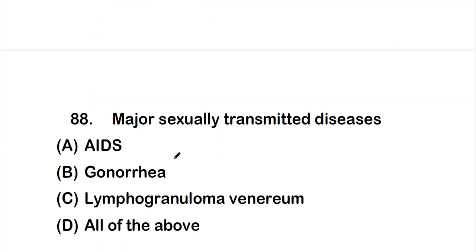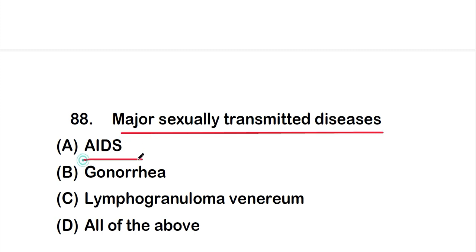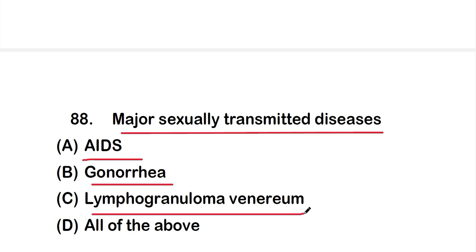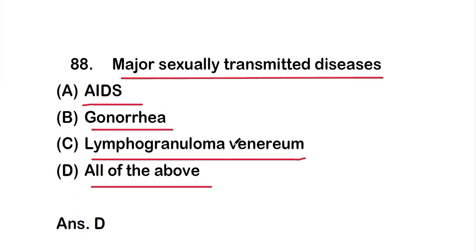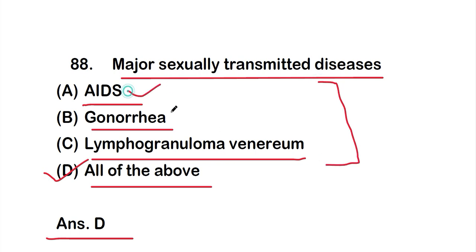Question number 88: Major sexually transmitted diseases. Option A: AIDS, option B: gonorrhea, option C: lymphogranuloma venereum, option D: all of the above. The correct answer is option D — all of the above are sexually transmitted diseases: AIDS, gonorrhea, and lymphogranuloma venereum.